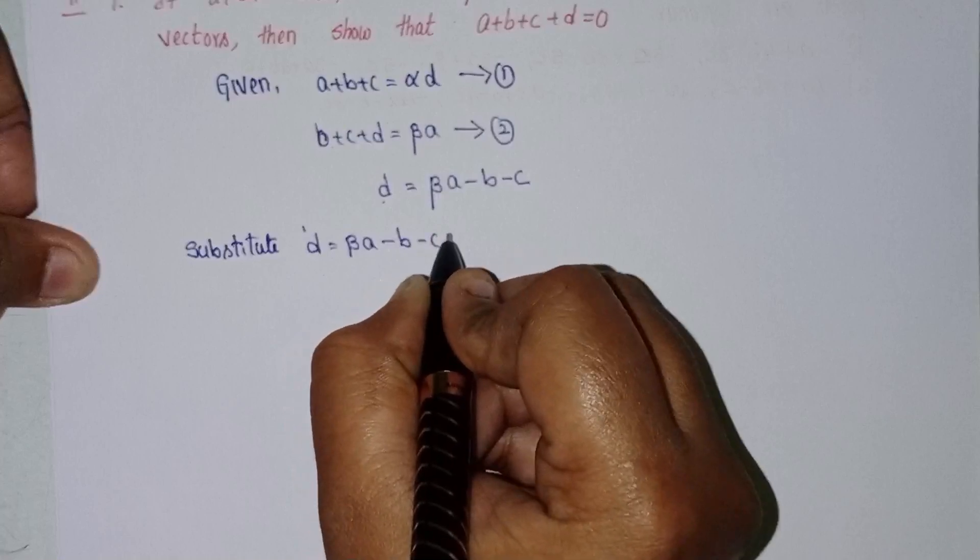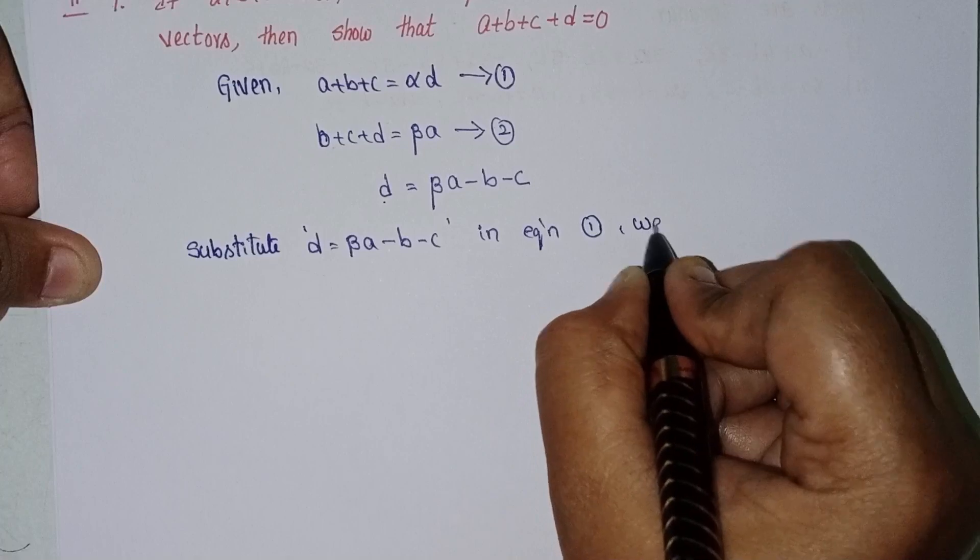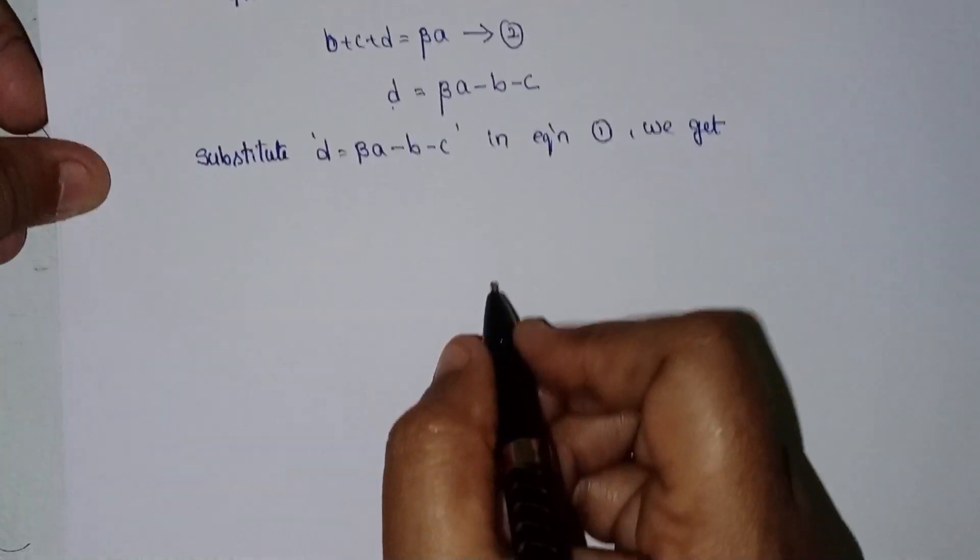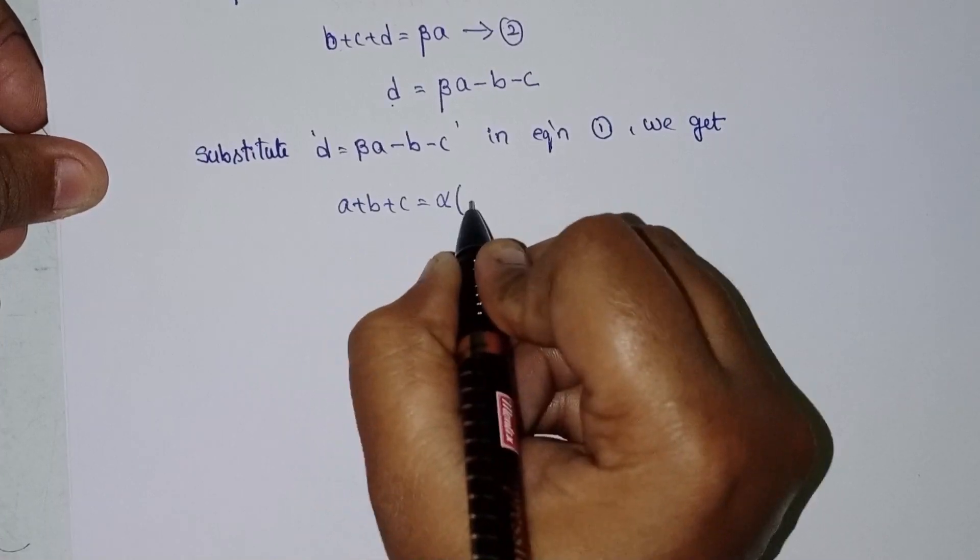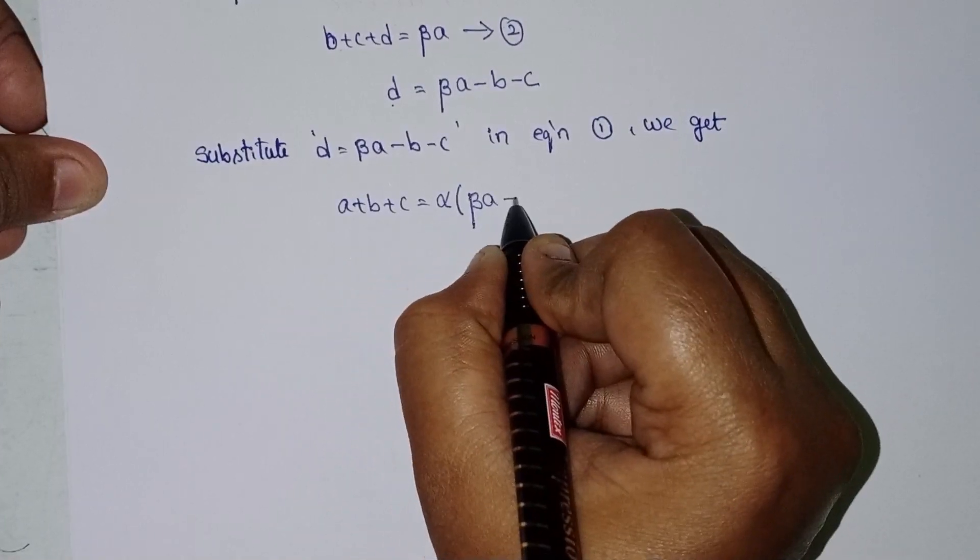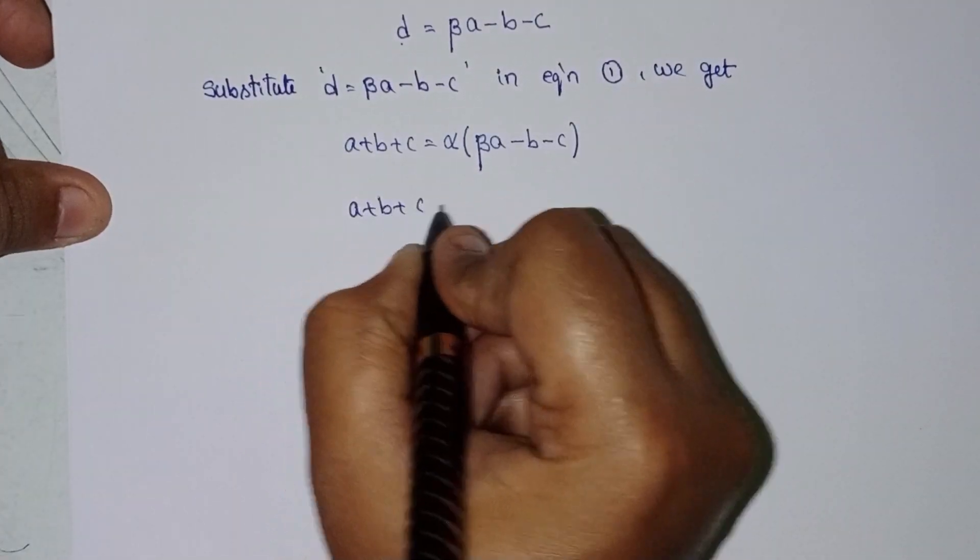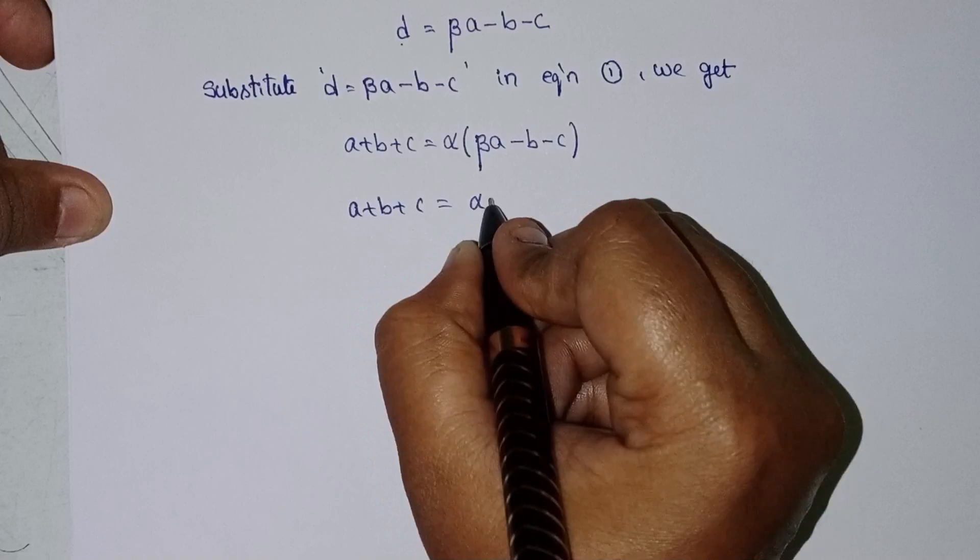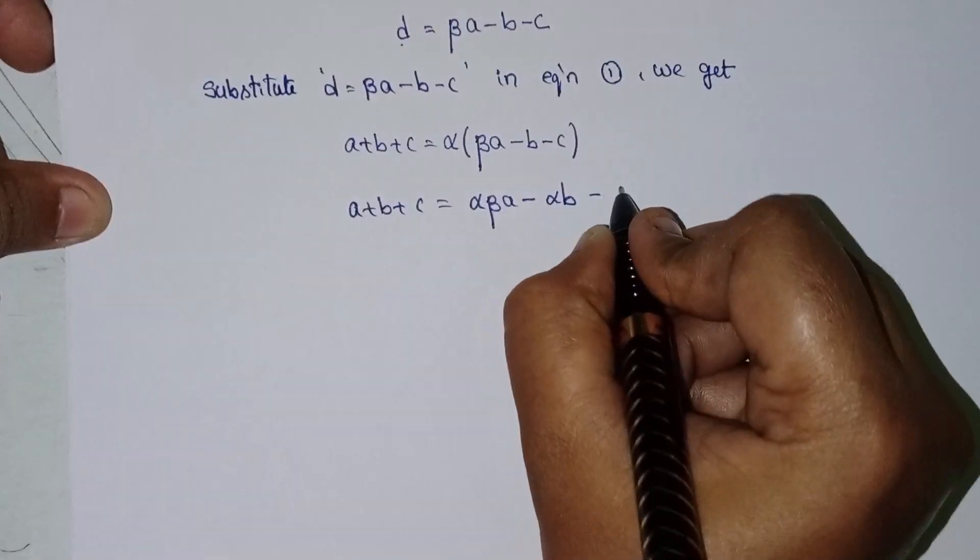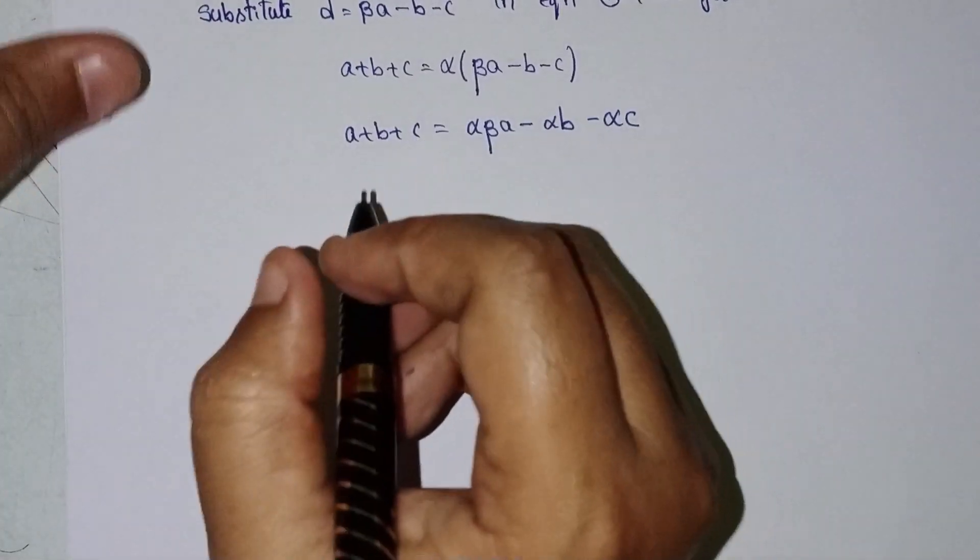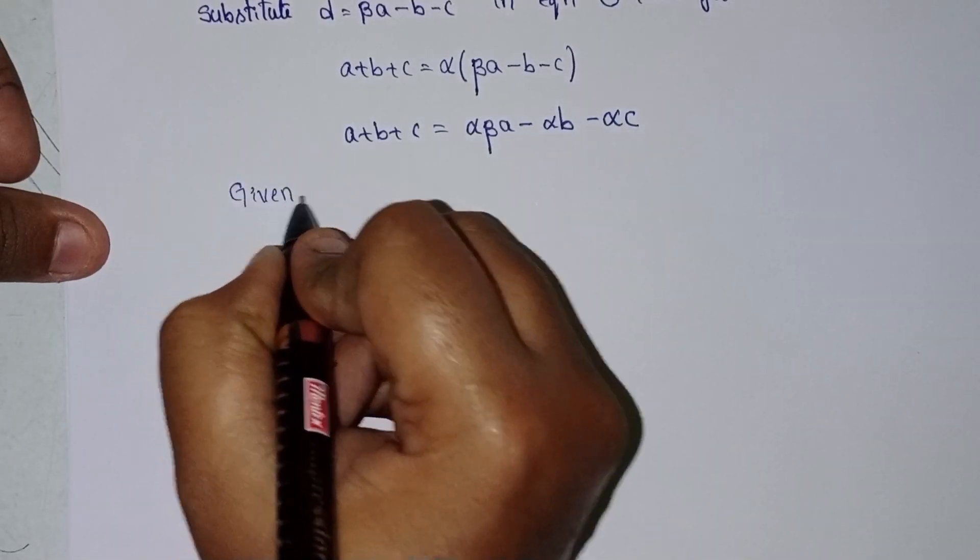We get a plus b plus c equal to alpha into a minus alpha into b minus alpha into c. This is equation 3.